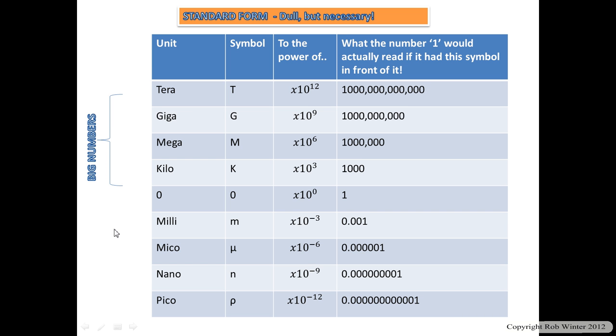We've also got some that go smaller, which is all of these below the zero line. Milli, as in millimeter. Micro, as in microphone, micrometer. Nano, as in nanotechnology. Okay, obviously you know these things tend to mean small items. So that's the first thing to remember. Remember the words.